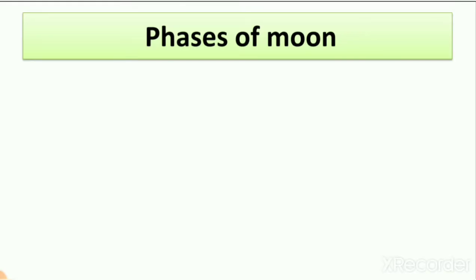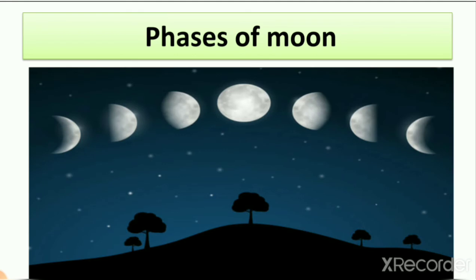The moon's shape changes every day, and we call this the phases of the moon. Here you can see the phases of the moon — the moon is different every night. Sometimes, one day in a month, there is no moon in the sky at all. The different shapes of the moon are known as the phases of the moon.